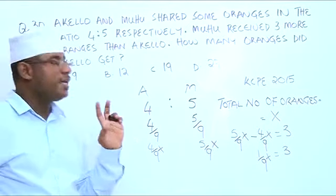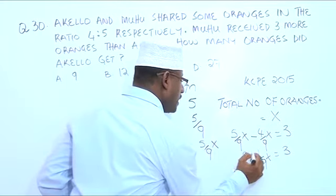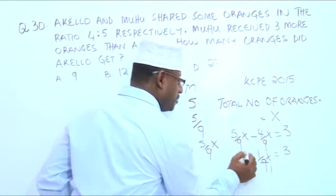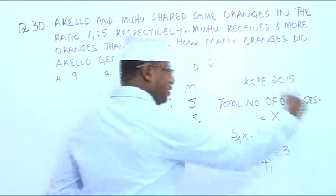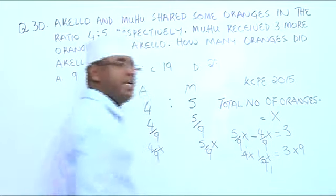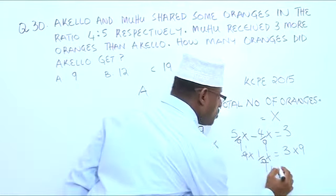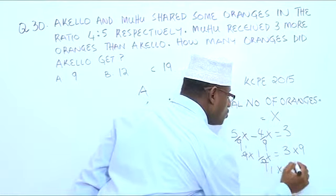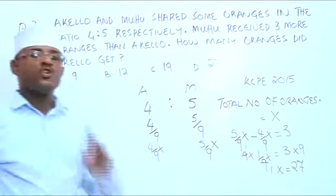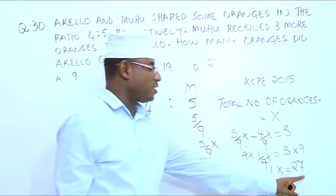Now we want to find X. We multiply both sides by 9 so that we can get rid of the 9 here. On the other side, we multiply by 9 as well. So 3 times 9 is 27. X is equal to 27. The total number of oranges is 27.